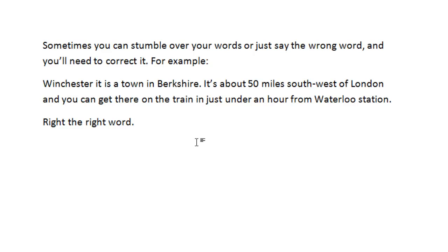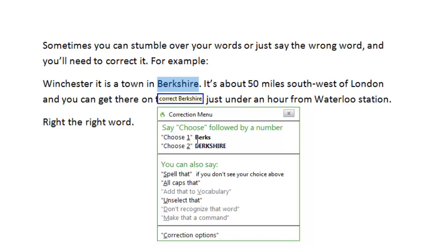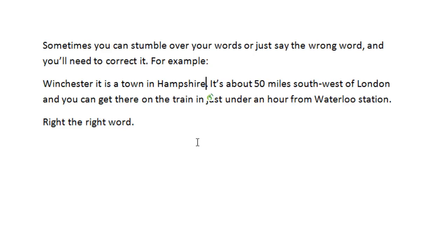For example: wake up, correct Berkshire, go to sleep. You'll see a dialog box has appeared with some possible options that you might have meant. To choose one of these options you would just say 'choose' followed by the appropriate number. In this case however we know that Winchester is actually in Hampshire and that's not an option, so you can just say the word it's supposed to be: wake up, Hampshire, go to sleep — and you can see that it's changed the word.